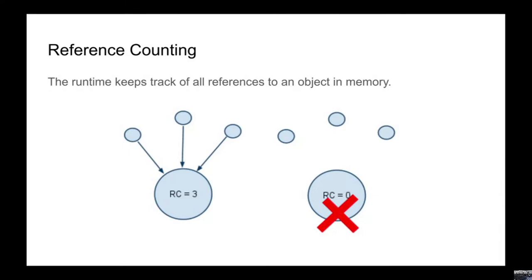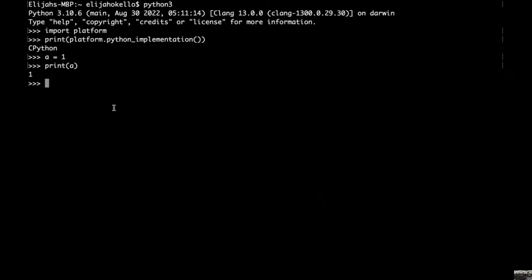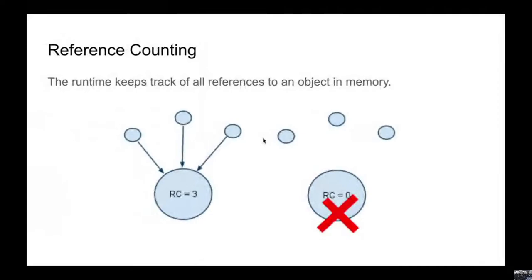Reference counting tracks the number of references on an object. When you create a variable and give it a value, the reference count increases to one. When you pass that variable into a function — like passing it into print — it gets another reference, so the reference count increases again. An object with three pointers pointing to it has a reference count of three; an object with no references has a count of zero and will be collected.